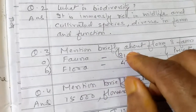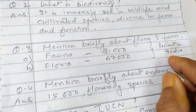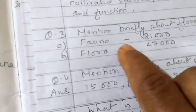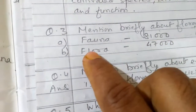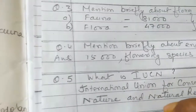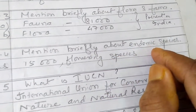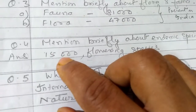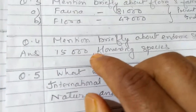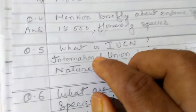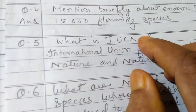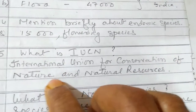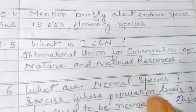Question: Explain briefly about the flora and fauna found in India. 81,000 species of fauna and 47,000 species of flora are present in India. Regarding endemic species — flowering species found in India only — 15,000 flowering species are there. What is IUCN? It is the International Union for Conservation of Nature and Natural Resources.